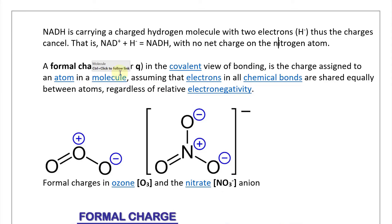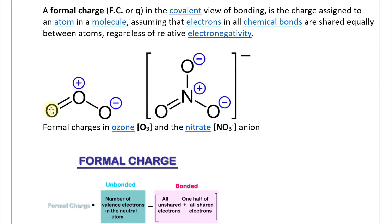A formal charge, or FC, in the covalent view of bonding is a charge assigned to an atom in a molecule, assuming that electrons in all chemical bonds are shared equally between atoms, regardless of relative electronegativity. For example, in ozone O3, the molecule has no net charge overall, but one oxygen has a formal plus charge and another has a formal minus charge. In nitrate, NO3⁻, the overall charge is negative one, but specifically the N has a plus formal charge and two oxygens each have a minus charge.